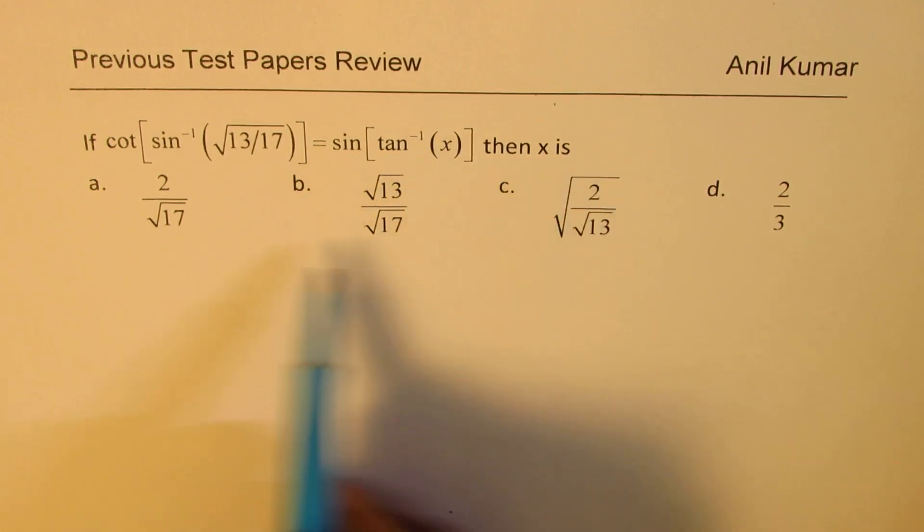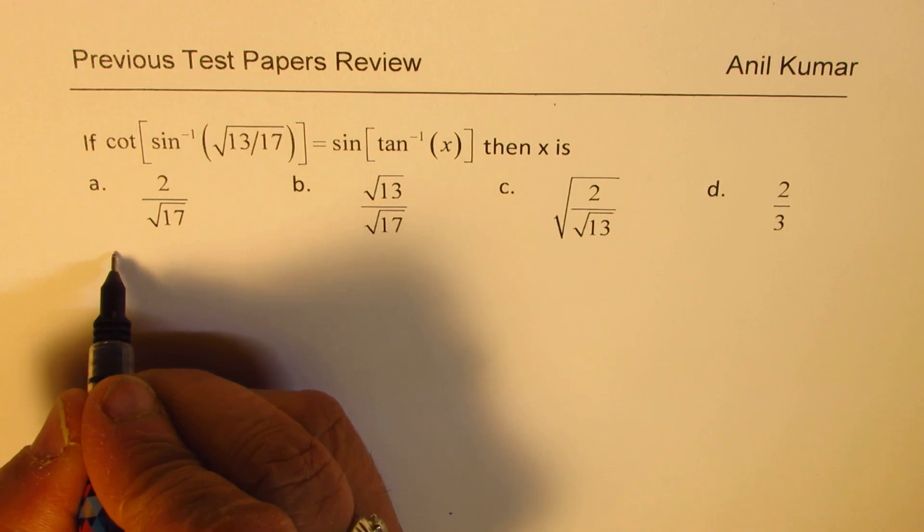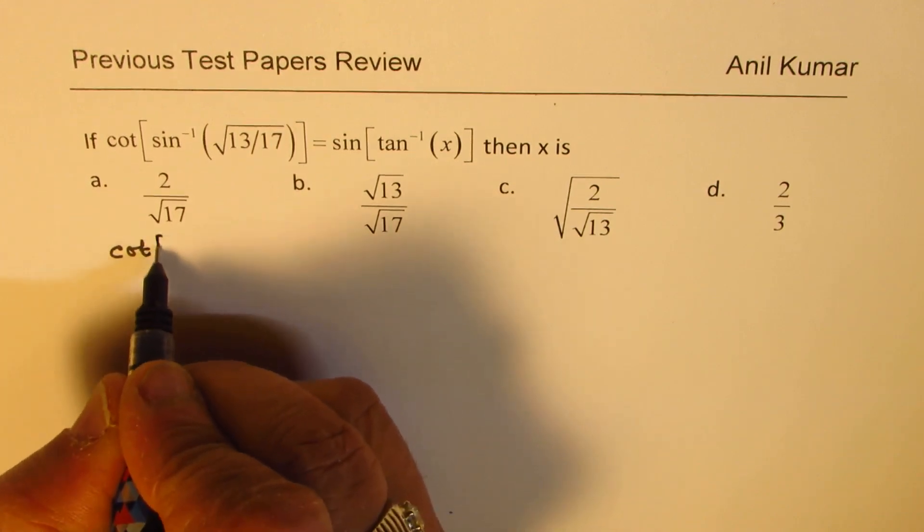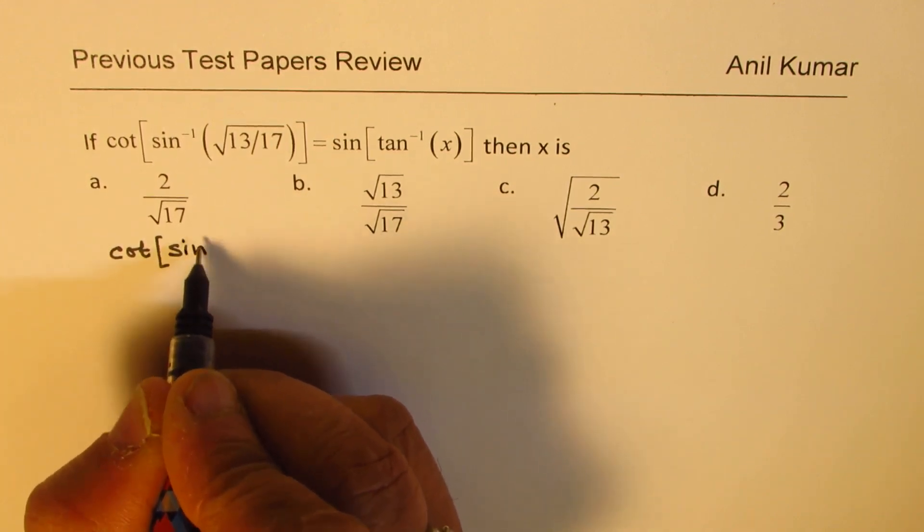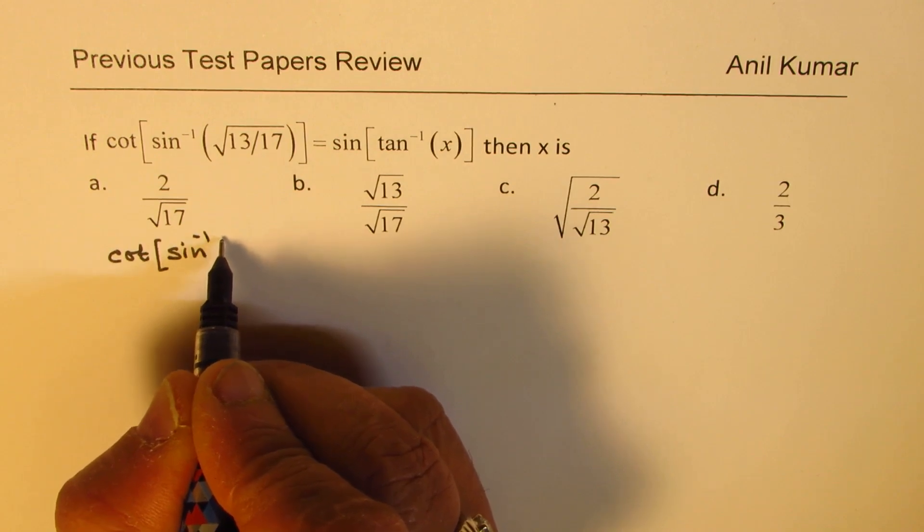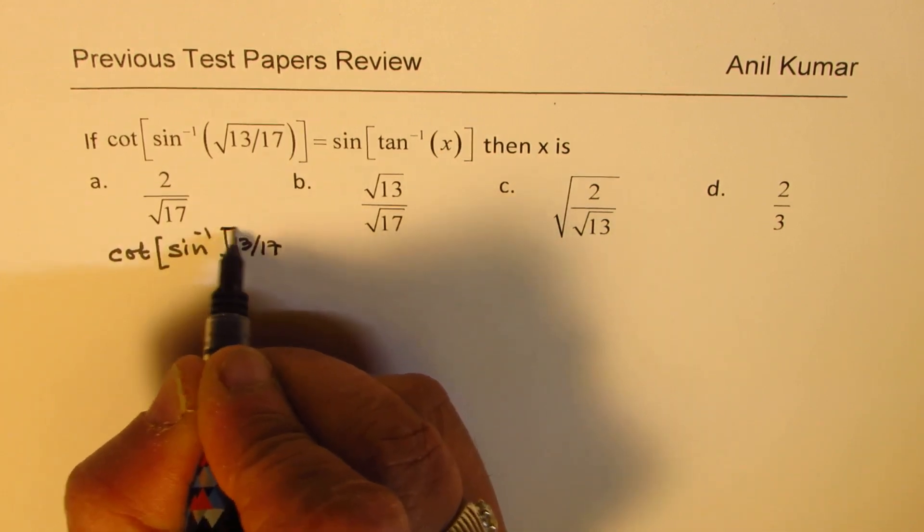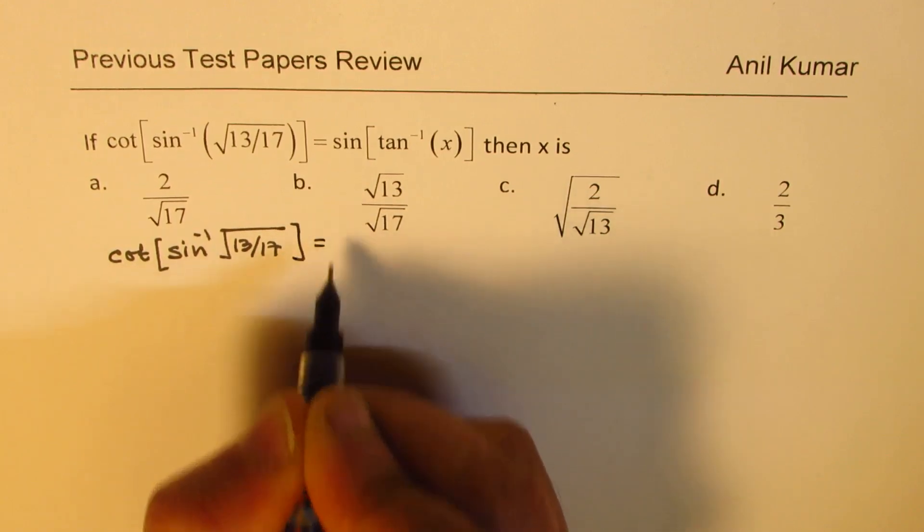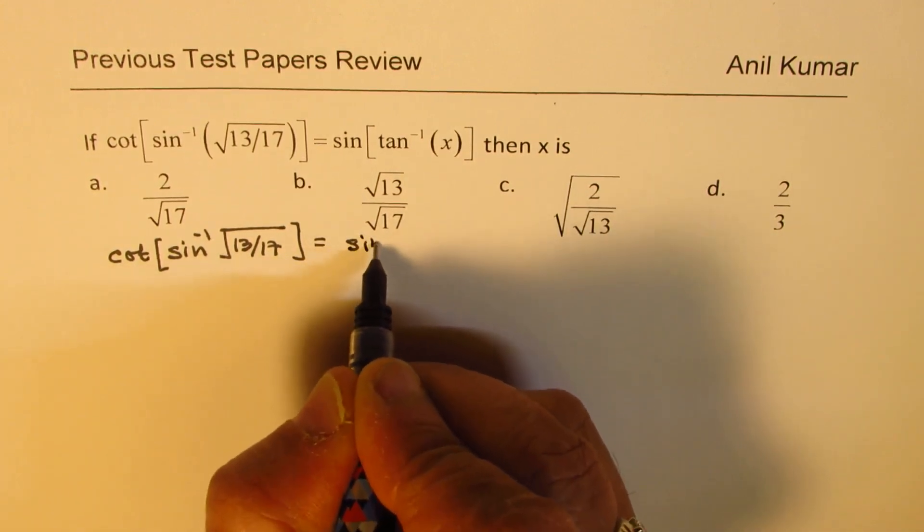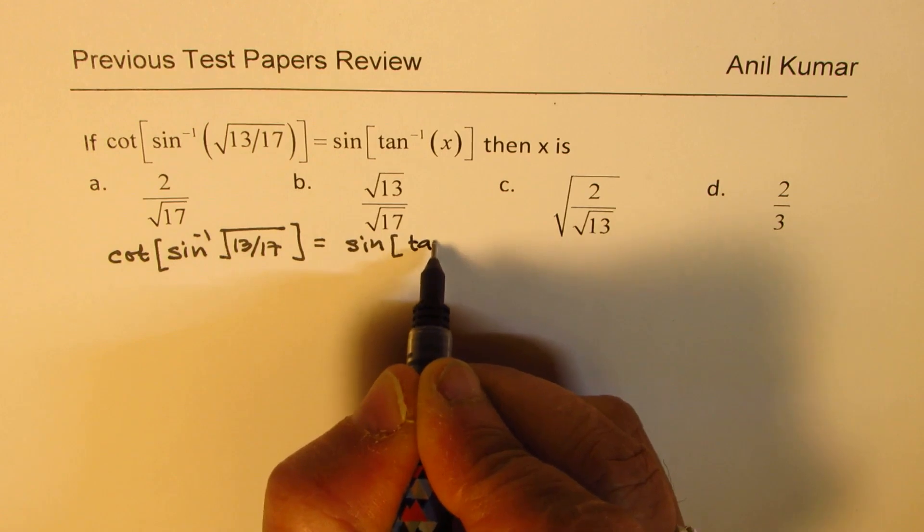Let us copy the question first. We have cot of sine inverse square root of 13 over 17, both are within square roots, equals to sine of tan inverse x.